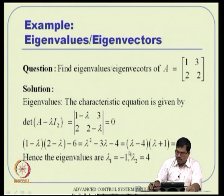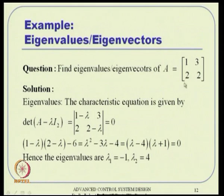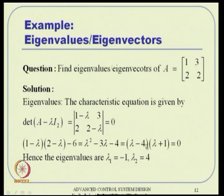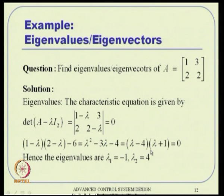Note that these eigenvalues are real even though the matrix is not necessarily symmetric. However, if you start with a symmetric matrix, you are guaranteed to get real eigenvalues — that is one of the theorems we saw last class. For a symmetric matrix, the eigenvectors are also guaranteed to be orthogonal.